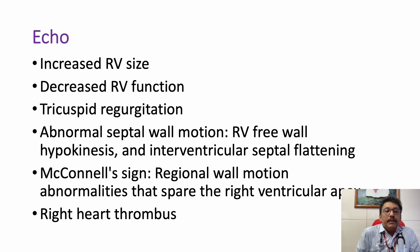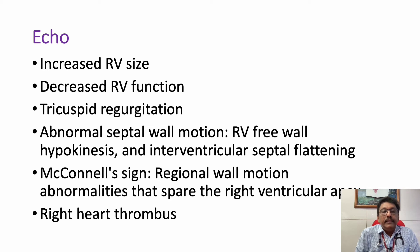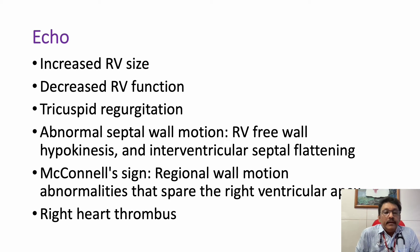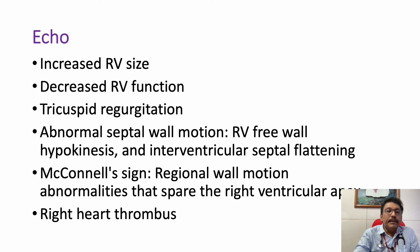Echocardiography is an important tool, especially in massive pulmonary embolism, though mild PE may show no changes. Key echo findings include increased RV size, abnormal septal motion, RV free wall hypokinesis, interventricular septal flattening, the McConnell sign (regional wall motion abnormalities sparing the right ventricular apex), and right heart thrombus. Acute cor pulmonale is a classical echo finding in massive pulmonary embolism.